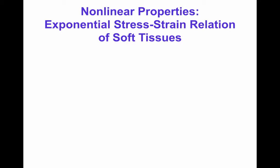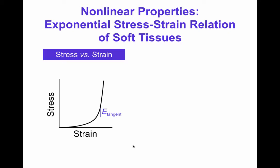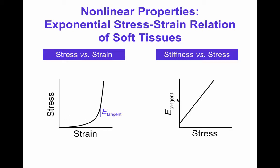Having discussed properties that Hookean elastic materials do display, I now want to discuss properties they do not display. The first is non-linearity, because Hookean means linear. Non-linear stress-strain behavior is typical of many soft biological tissues like skin, muscle, ligaments, and tendons, where the more you stretch the tissue, the more the stiffness or tangent modulus increases. If you plot the tangent modulus versus stress for many soft tissues, you find it is approximately proportional to the stress — meaning the stress-strain relationship of many soft tissues is approximately exponential.